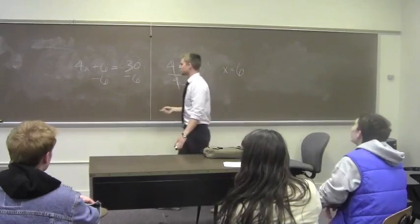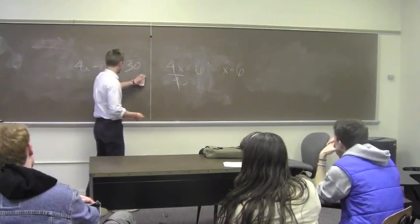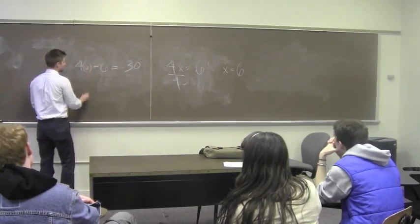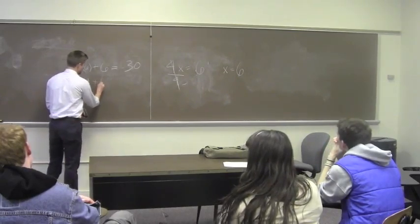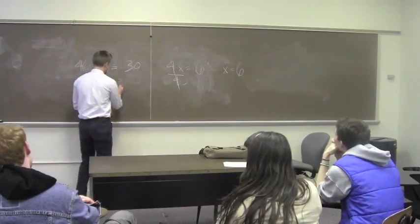Now we can try this out. Let's substitute 6 in for x. 4 times 6 equals? 24. We just did this. Plus 6 equals 30. We're getting it, great.